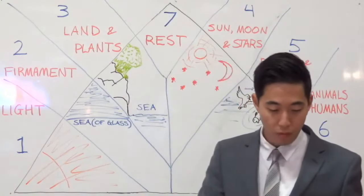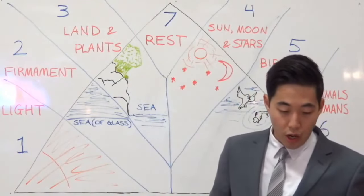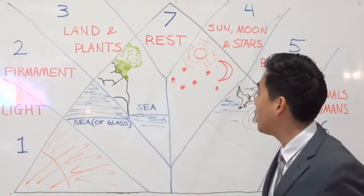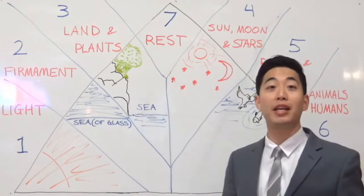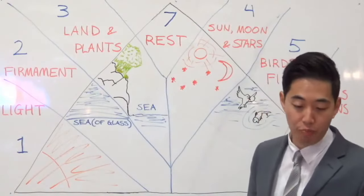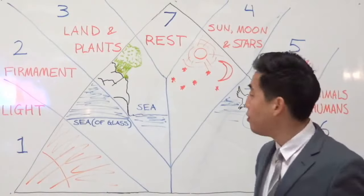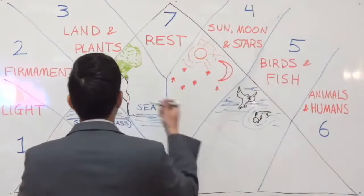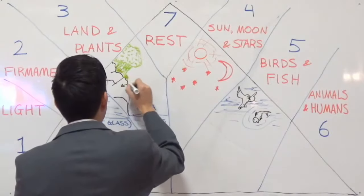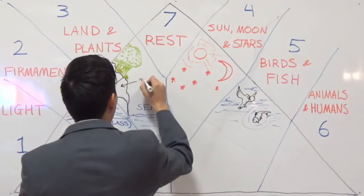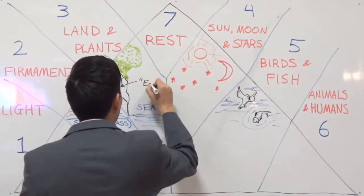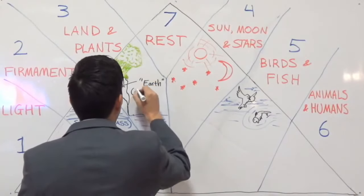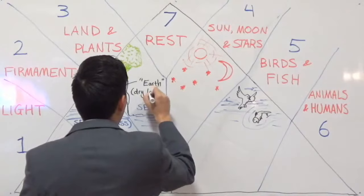So we now understand why the dry land was below here, and God had to gather the waters together to one place so that the dry land could appear. It says 'and it was so' at the end of verse 9 — it happened, it came to pass. And God called the dry land earth. The Lord calls this dry land earth.